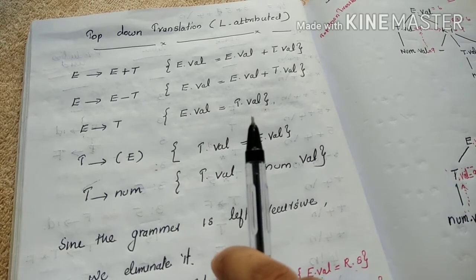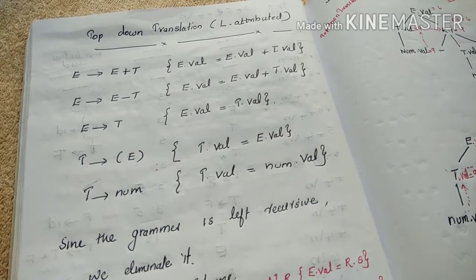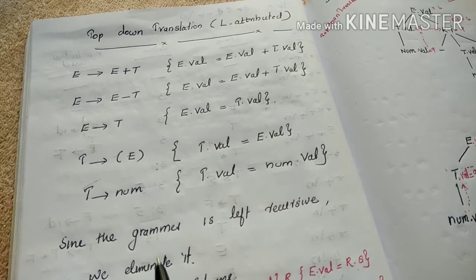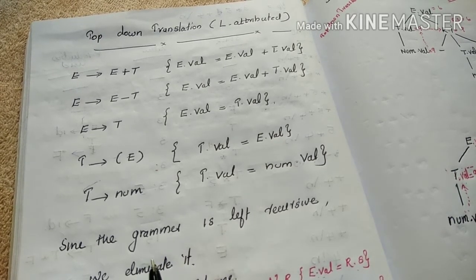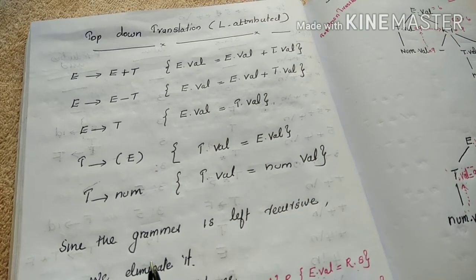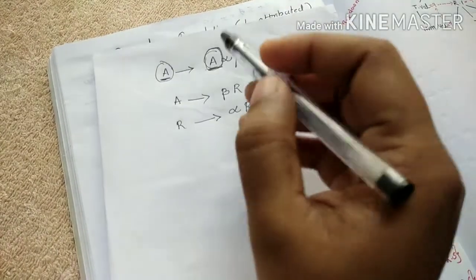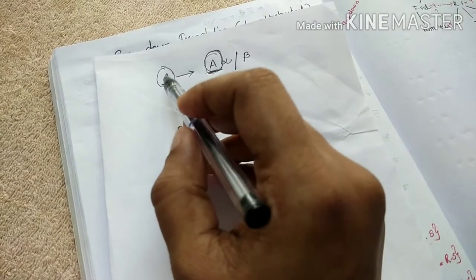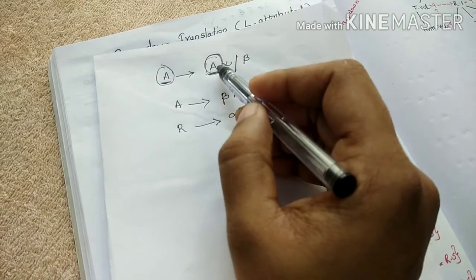For top-down translation, first we have to check whether the given grammar is left recursive or not. In the same grammar, we will check for left recursion. The left-most symbol is repeated here, so this grammar is left recursive.